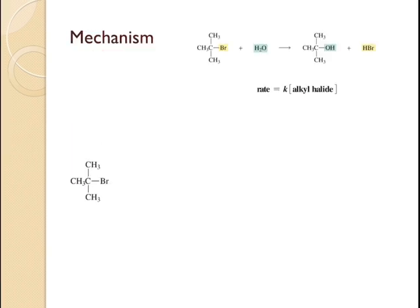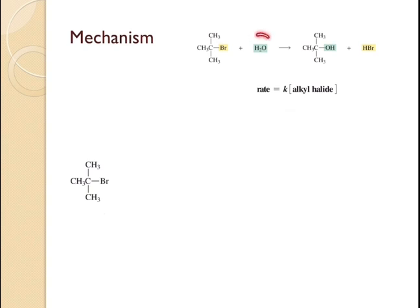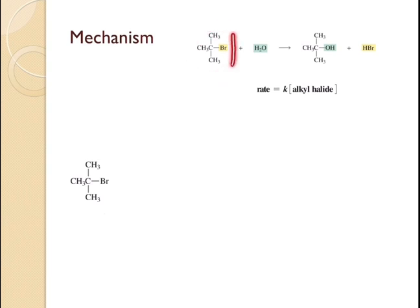In order to determine the mechanism for any particular reaction, we have to understand the different factors which are going to affect the rate of the reaction, and also we have to know the configuration of the final products obtained. For this particular reaction, they found the rate to be proportional to the concentration of the alcohol halide, and it was not affected by the concentration of the nucleophile. So if you double the concentration of the alcohol halide, the rate of the reaction doubled, whereas there was no change when they increased or decreased the concentration of the nucleophile. On the whole, this particular reaction follows first-order kinetics.